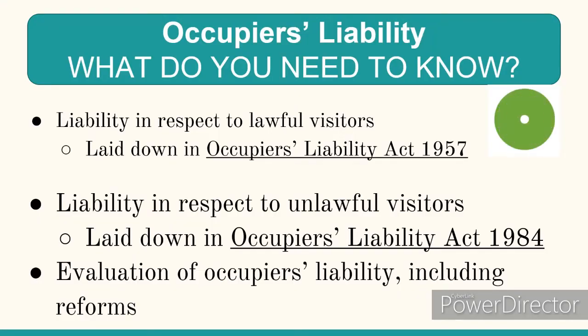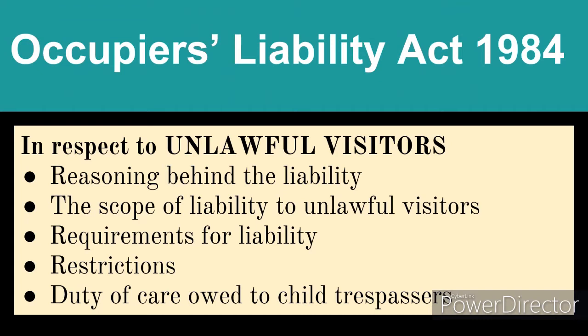This is our second lesson on Occupier's Liability. In the first lesson we looked at the Occupier's Liability Act 1957, which lays down liability in respect to lawful visitors. In this lesson we're going to focus on the Occupier's Liability Act 1984, which lays down the law in relation to unlawful visitors — so what liability the occupier might owe an unlawful visitor who might be harmed on the occupier's property.